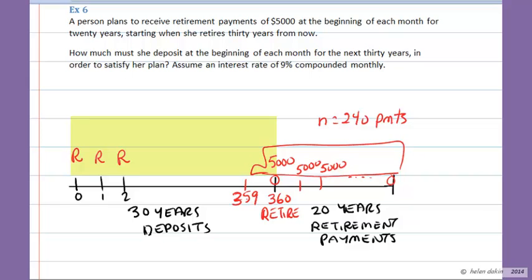And she's going to be making her last deposit of R dollars at the beginning of the 359th month because each payment is going to be made at the beginning of the month. So when I wrap an annuity bus around this, you can see that what I've got here is a series of two annuities, one right back to back, one right after the other. And we've got a total of N equal to, in this first case, 360 deposits.